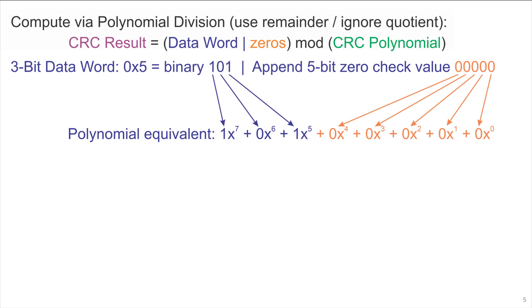The polynomial equivalent of this code word is 1x^7 + 0x^6 + x^5 for the data word portion, and zero coefficients on the x^4 through x^0 terms for the initial check value used for the computation.